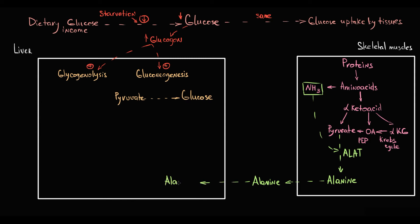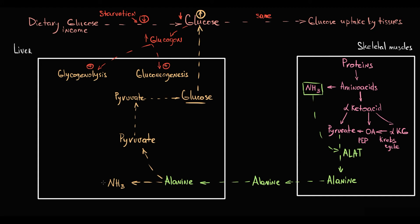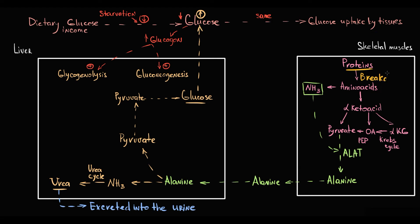The liver takes up alanine from circulation and, by alanine aminotransferase, converts alanine back to pyruvate with release of free ammonia. From pyruvate, the liver produces glucose that enters the blood, and by this the liver maintains blood glucose levels during starvation. Free ammonia is utilized in the urea cycle with formation of a urea molecule that can safely enter the bloodstream, and from the blood urea is excreted into the urine.